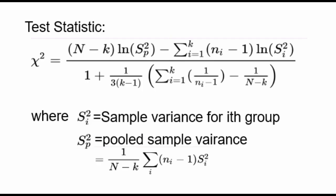Now see the test statistic formula. Here Si² is the sample variance for the i-th group and Sp² is the pooled variance.